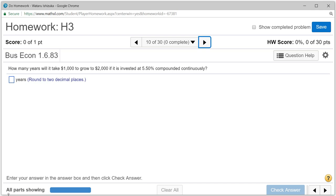All right, let's look at homework three, problem number 10. How many years will it take $1,000 to grow to $2,000 if it is invested at 5.5% compounded continuously?